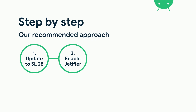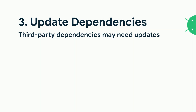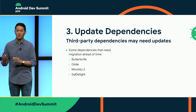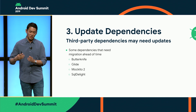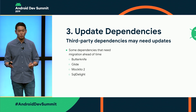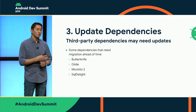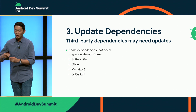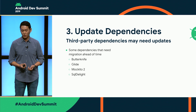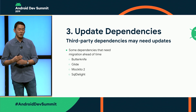Moving on to step three: once you've enabled Jettifier, we'll need to update your dependencies. A lot of third-party dependencies may need to be updated before you actually start the migration. One of our flagship sample apps is Plaid, which uses the Glide image loading library. When we did the migration without first migrating our Glide dependency, we ran into compilation issues and found that the version of Glide we were using was not AndroidX compatible. We first updated Glide and our other dependencies, then ran the AndroidX migration, and the error no longer appeared.